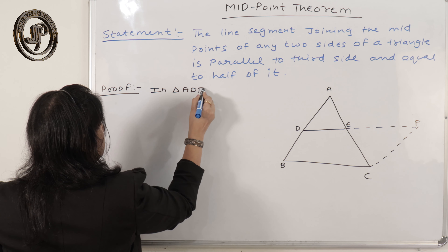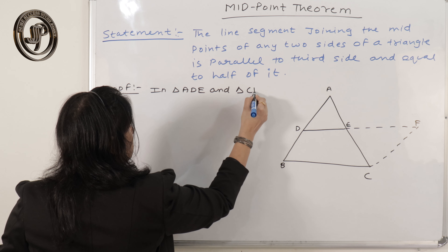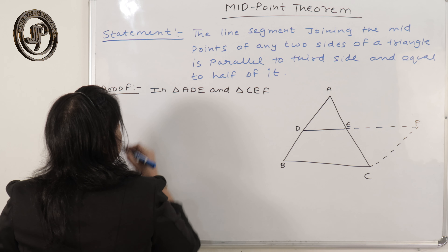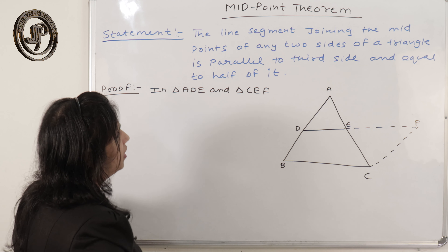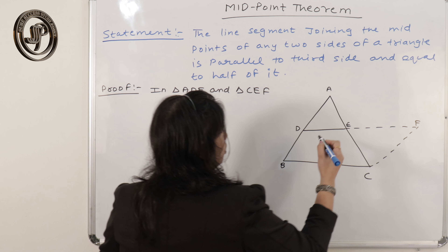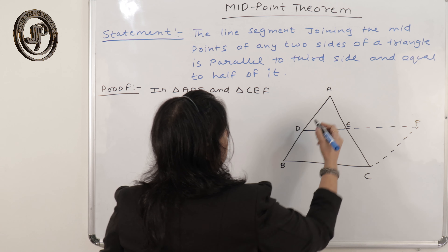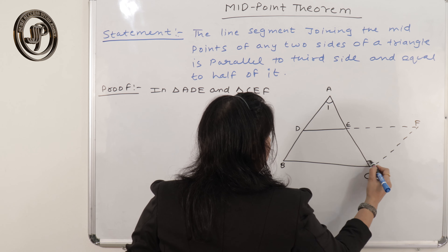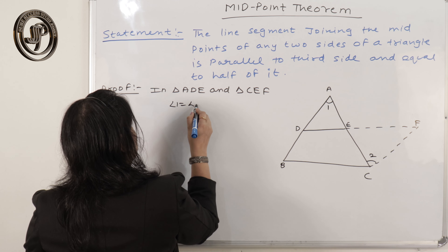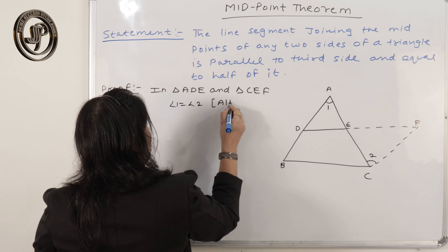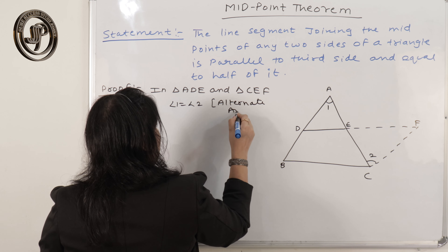In triangle ADE and triangle CEF — I am making these two triangles congruent. Since CF is parallel to BA, if I consider angle 1 and angle 2, I can write angle 1 equals angle 2, reason: alternate angles.